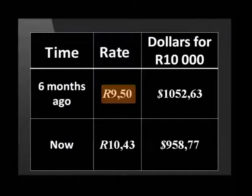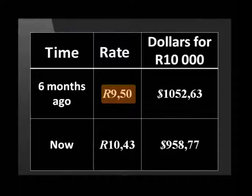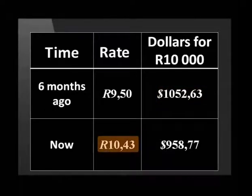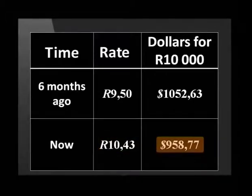Sometimes economists talk about a stronger and weaker rand. Let's look at the example of the rand-dollar exchange rate changing from 9 rand 50 six months ago to 10 rand 43 now. When the exchange rate was 9 rand 50 to the dollar, 10,000 rand would buy 1,052 dollars 63 cents. Now that the exchange rate is 10 rand 43 to the dollar, 10,000 rand only buys 958 dollars and 77 cents. The exchange rate of 10 rand 43 gives fewer dollars than the exchange rate of 9 rand 50. When we can buy fewer dollars for the same amount of rands, we say that the rand is weaker.